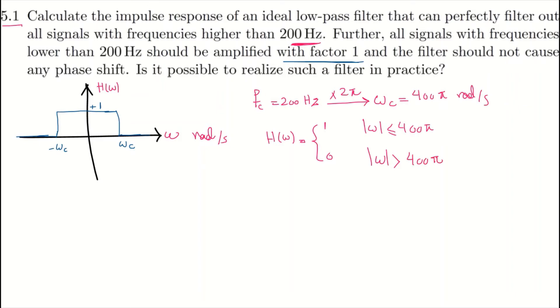So this is the expression for this filter. I can say H of omega is actually a rectangular function. Here we have omega on top and in the denominator we have two times omega C. That's the definition of the rectangular function. We have the whole period in the denominator, so it's 2 times 400 pi, that's 800 pi.